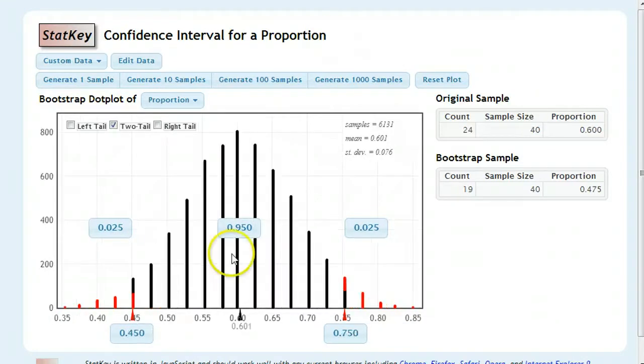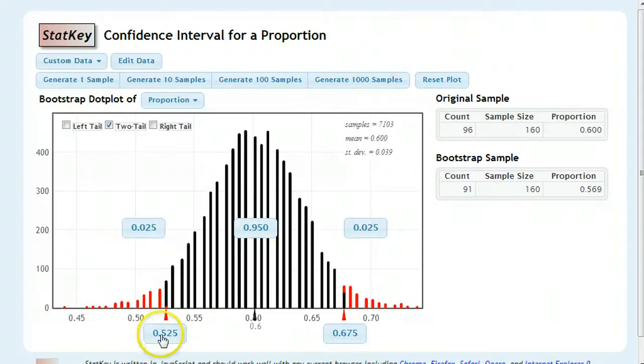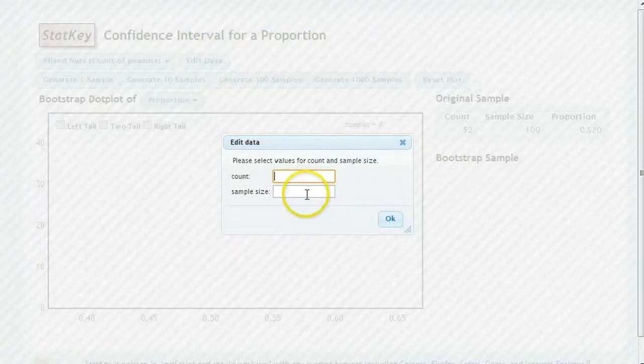When we interviewed 40 people, our interval was quite large. When we interviewed 160, our interval got a little bit smaller. Still not great, though. Well, let's get real extreme with this.